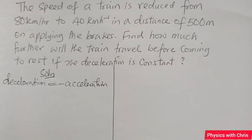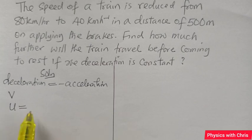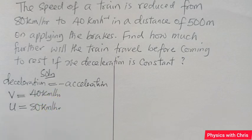To start solving this question, let's write out the known variables. The speed of the train reduced from 80 km per hour, which is the initial velocity at time t equals zero. It reduced to a velocity of 40 km per hour, which gives the final speed.